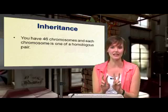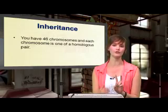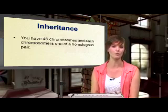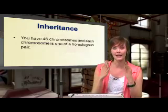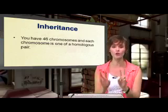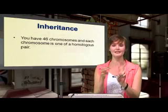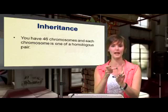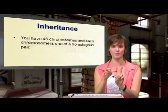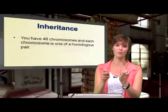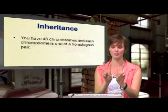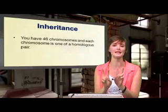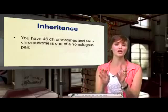Each gene codes for a certain characteristic — whether it be for making hair, making bone, your eye colour, or your nose shape. It codes for one characteristic. And that code will be found somewhere on the chromosome from your mum and from your dad, and it is found in the same place. We say they are at the same place, or they are on the same locus.